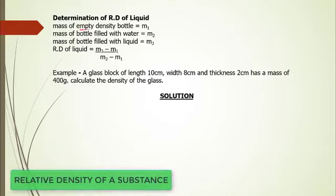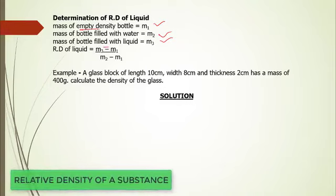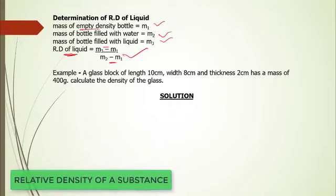To determine the relative density of a liquid, we need the mass of an empty density bottle (m1), the mass of the bottle filled with water (m2), and the mass of the bottle filled with the liquid such as alcohol or oil (m3). The relative density of the liquid equals (m3 minus m1) divided by (m2 minus m1), which is the ratio of the mass of the liquid to the mass of an equal volume of water.